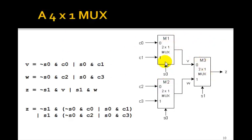Now, if we take 3 of these 2 to 1 muxes and arrange them this way, where we connect s1 as the control line for this one and s0 to both of these, then this will make a 4 to 1 mux. We can see that. This is a 2 to 1 mux. The output is v. Here's the logic equation. v is going to be not s0 and c0 or s0 and c1. Then w, the output of this one, is going to be not s0 and c2 or s0 and c3.